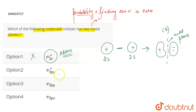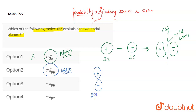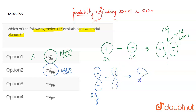Talking about π*2py — again, this is also an anti-bonding molecular orbital, so it also undergoes destructive interference. The 2py orbital and another 2py orbital undergo destructive interference because an anti-bonding molecular orbital is formed. What we are going to get are orbitals something like this: plus, minus, minus, plus.